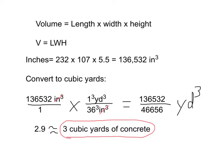So 136,532 over 1 times 1 cubed over 36 cubed. When we multiply across the top or in the numerator I get 136,532 in the numerator. And in my denominator, 1 times 36 cubed, or 36 times 36 times 36, is 46,656. Then I need to take 136,532 divided by 46,656 and I get 2.9, which is approximately equal to 3 cubic yards of concrete, which is what I'll need for my porch.